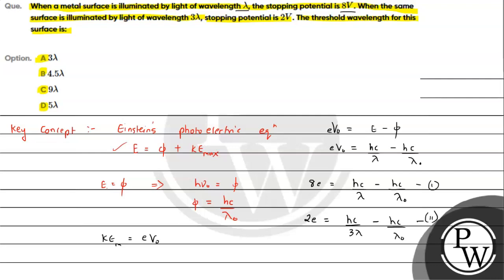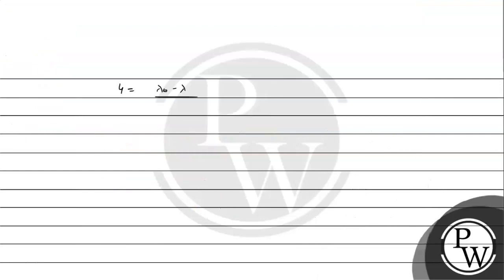Now let's divide equation 1 by equation 2. We get 4 equals (1/lambda minus 1/lambda naught) divided by (1/3lambda minus 1/lambda naught). Cross-multiplying and solving: 4 times (lambda naught minus 3 lambda) divided by 3 equals lambda naught minus lambda. This gives 4 lambda naught minus 12 lambda equals 3 lambda naught minus 3 lambda.